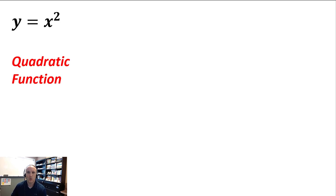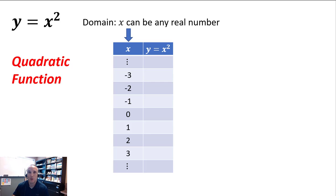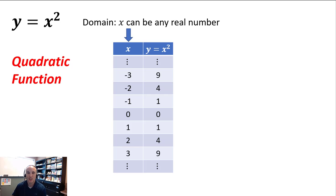Y equals X squared is called a quadratic function or the square function. We're back to letting X be anything because we can square any X value. So let's generate our XY table — we'll throw some negatives, zero, and some positives in there. To generate the Y values, we're just going to square those X values. Remember, when you square a negative number, you get a positive number. So you see a pattern with the Y values — they're the same for the negative X values as they are for the positive X values. When you plot those points, you start to see a symmetry over the Y axis. When you connect the points together, you get this U shape — this is called a parabola. A quadratic graph is a parabola. It's symmetric over the Y axis, so it's an even function.